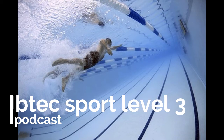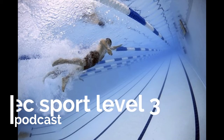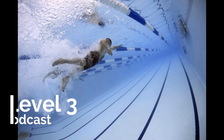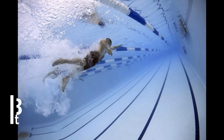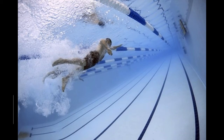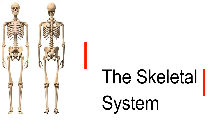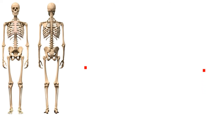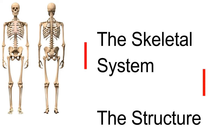Unit 1 is about Anatomy and Physiology. We're going to start with Learning Aim A, which primarily looks at the skeletal system. We're going to start by looking at the structure of the skeletal system as well as some of the key terms that are going to come up across all of the anatomy things that we need to know.